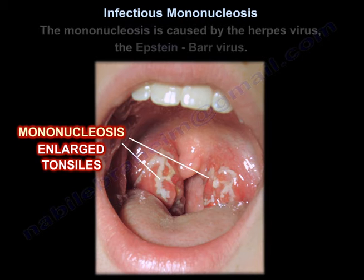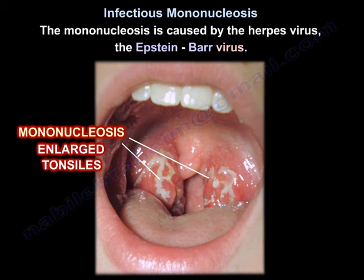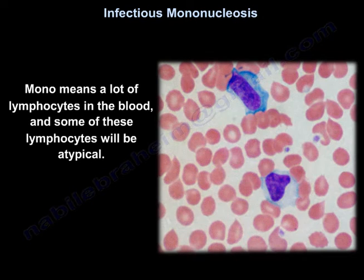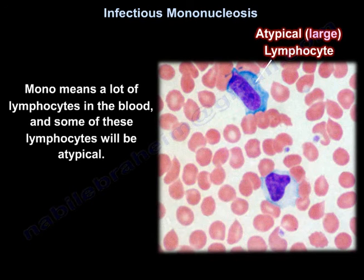Mononucleosis is caused by a herpes virus, the Epstein-Barr virus. 'Mono' refers to a lot of lymphocytes in the blood, and some of these lymphocytes will be atypical.